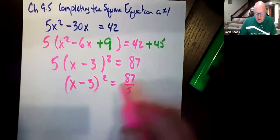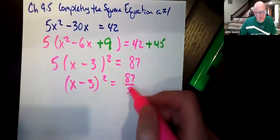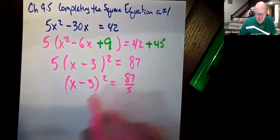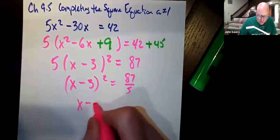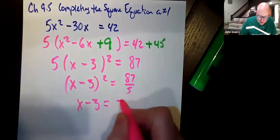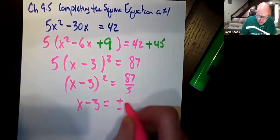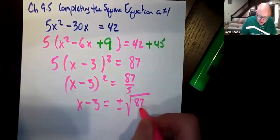Now, we've got to take the square root of both sides, that's some ridiculously terrible number. But it is what it is, we're just going to write it down. So, plus or minus the square root of 87 over 5.